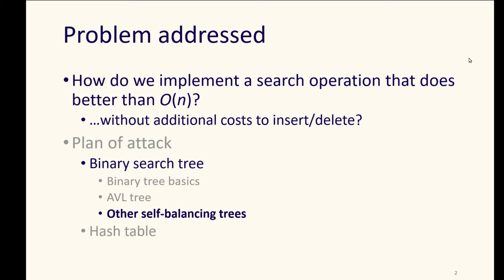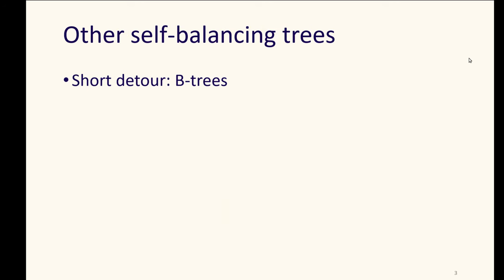So if we still have that goal of implementing search that does better than O of N, but does not incur significant other costs to insert or delete, we had binary search trees and we saw some ways to keep them reasonably within that goal. But there are other kinds of trees that can help us in this.